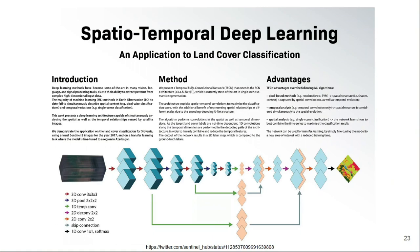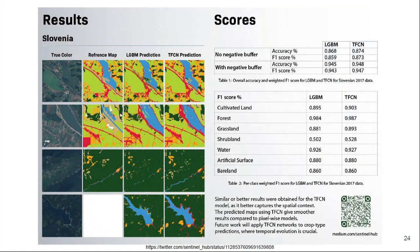Synergize tested a traditional pixel-based model and a deep learning model that takes into account spatial and temporal context — a U-Net that also has a temporal dimension. The results show that comparing pixel-based versus deep learning models, you get slightly smoother predictions with the deep learning model because it takes into account spatial context, and slightly better accuracy and F1 scores on both overall and per-class basis. I recommend looking at this poster and the three blog posts Synergize has published.